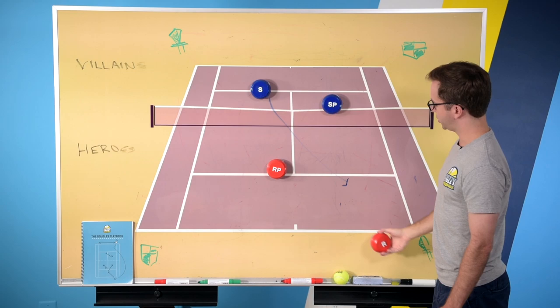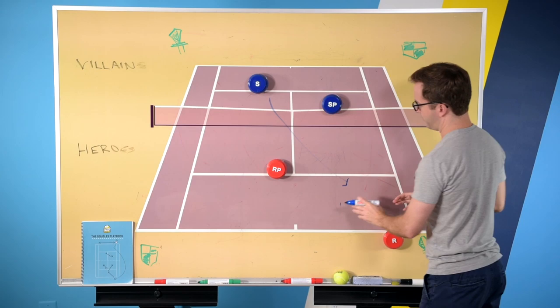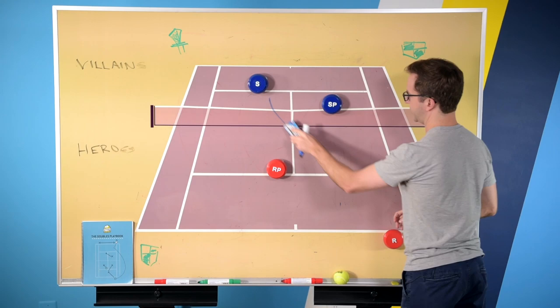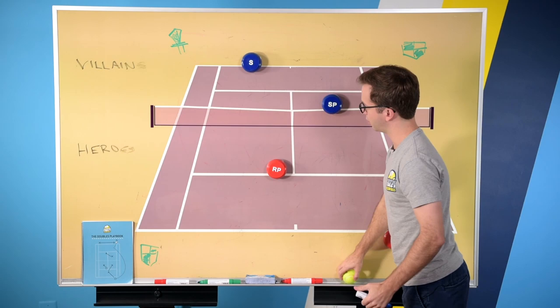But a good alternative is you actually stay back in this case, and you let your partner clean up if you hit a good return. So what would happen is you'd get the serve coming in,